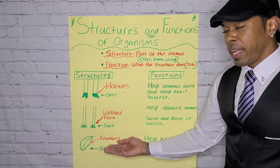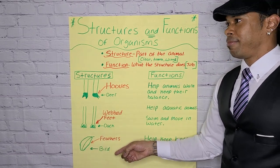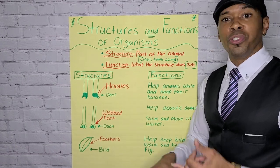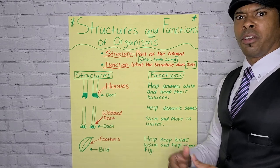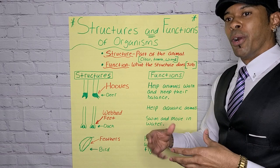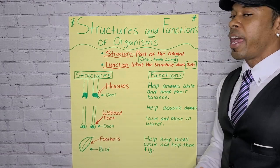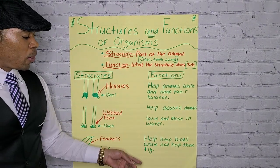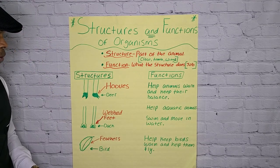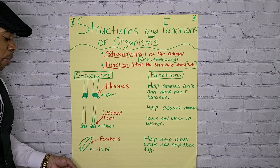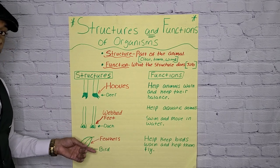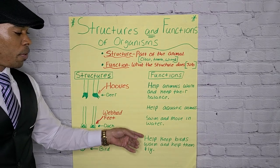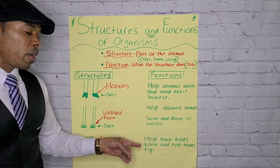Finally, our last one: we have feathers. What animal has feathers? Birds — different kinds of birds. It can be a blue jay, a bald eagle, a hawk, a vulture. So many different birds have feathers. The actual function of feathers helps keep birds warm and helps them to fly. So we know the structure of a bird is feathers. What does those feathers do? That's the function, the job. Those feathers help keep birds warm and also help them to fly.